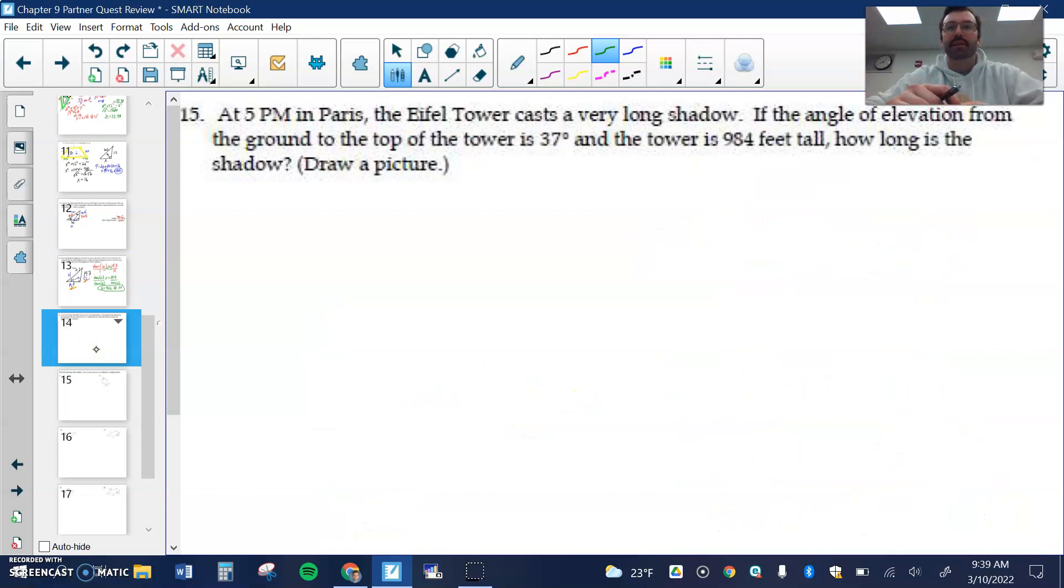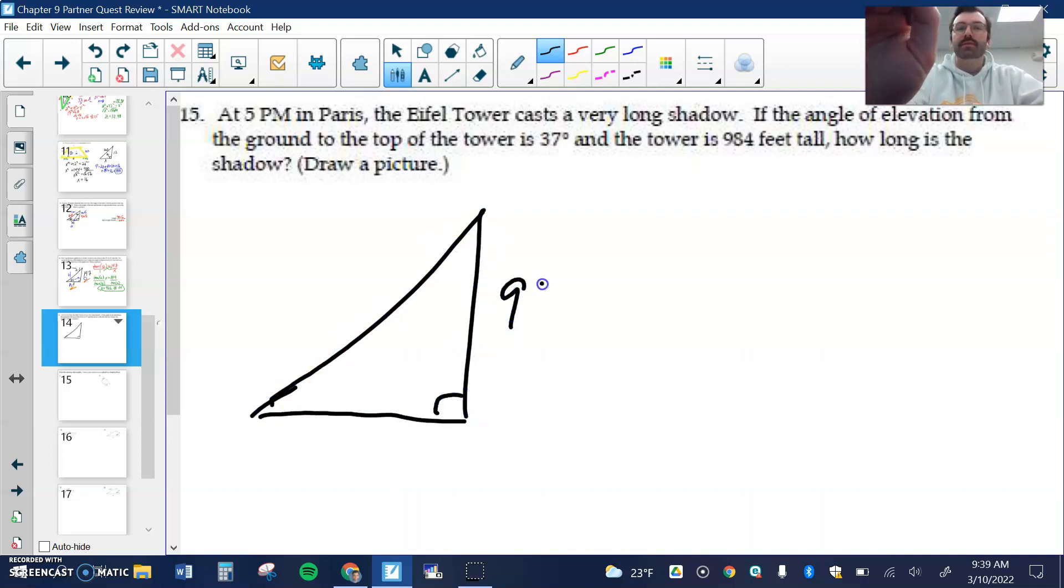The Eiffel Tower in Paris casts a very long shadow. If the angle of elevation from the ground to the top is 37 degrees and the tower is 984 feet, how long is the shadow? The angle of elevation, the angle will always go in this bottom left hand corner when we're doing these word problems. How long is the shadow? There's our x.